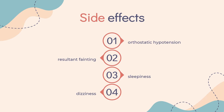Nausea and vomiting are common side effects when first beginning therapy with apomorphine. Antiemetics such as trimethobenzamide or domperidone, dopamine antagonists, are often used while first starting apomorphine. Other side effects include orthostatic hypotension and resultant faintness, sleepiness, dizziness, runny nose, sweating, paleness, and flushing.